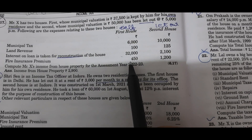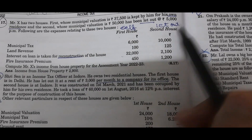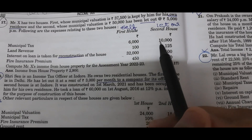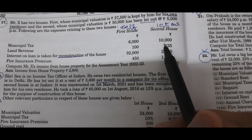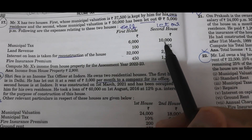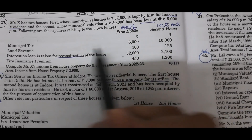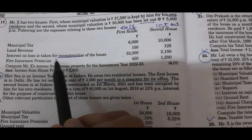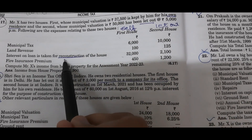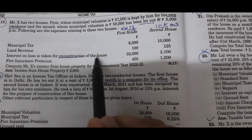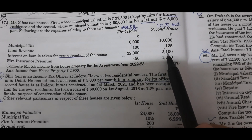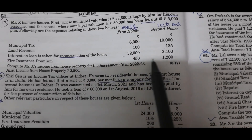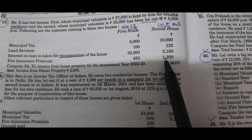Now for the second house, which is let out: municipal tax is Rs. 10,000. Land revenue and fire insurance are not deductible under house property. Interest on loan taken for reconstruction of the house is Rs. 2,100. In this question, standard rent is not given, so that part of the formula will not be covered.